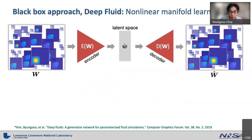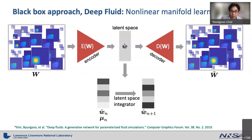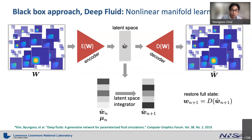A similar nonlinear compression approach is used in Deep Fluids, where an autoencoder compresses and decompresses the solution data W. The key difference is that latent space dynamics are learned by a latent space integrator after the autoencoder is trained. Integration in the reduced space is very fast. The predicted latent space solutions are then passed through the trained decoder to reconstruct full states.